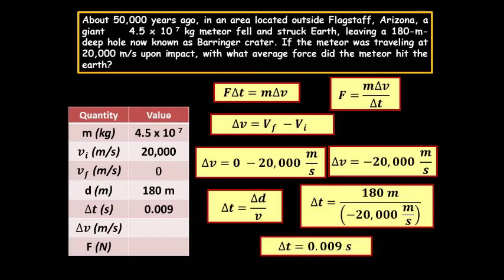Solving v equals d over t, delta t will be delta d over v. And delta t will be 0.009 seconds.